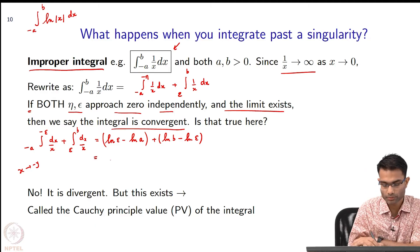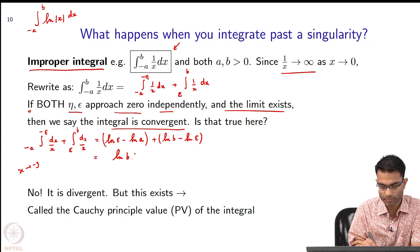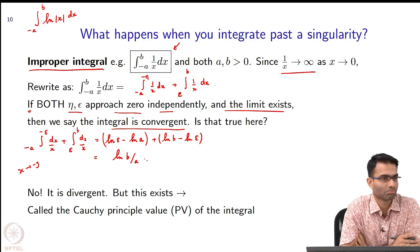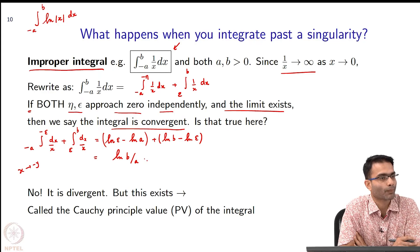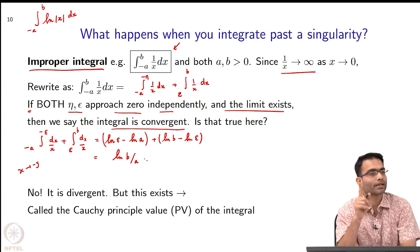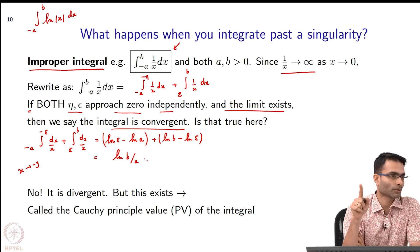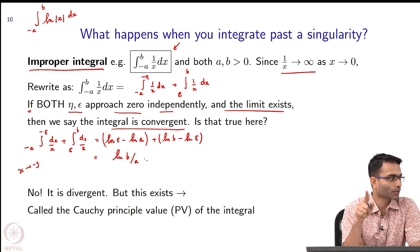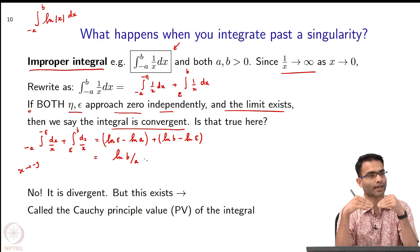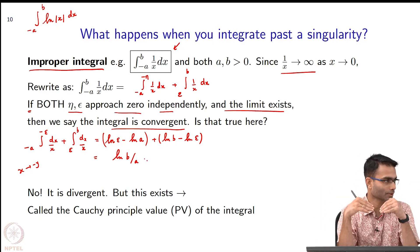Second term: log of b minus log of epsilon. What is that equal to? Log of b by a. It seems that this integral exists, but what happened? First thing I did is I made eta equal to epsilon. If I make eta equal to epsilon, both are going to 0 at the same rate because they are identical variables.